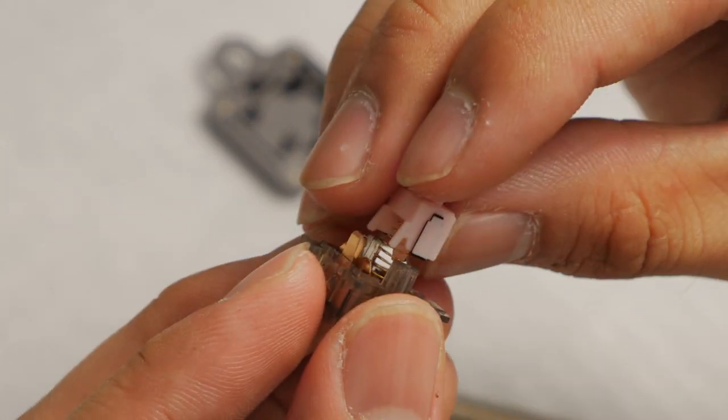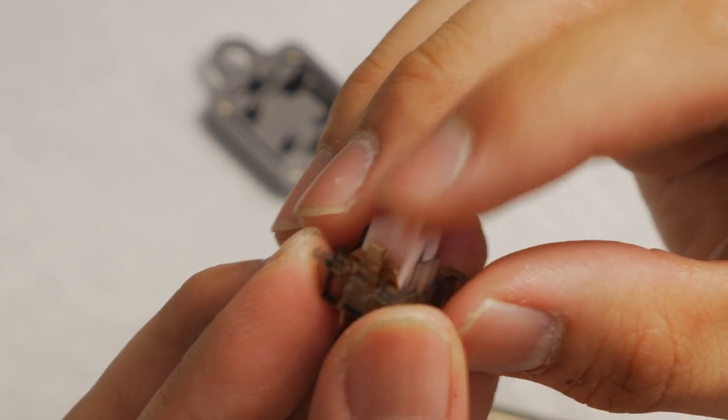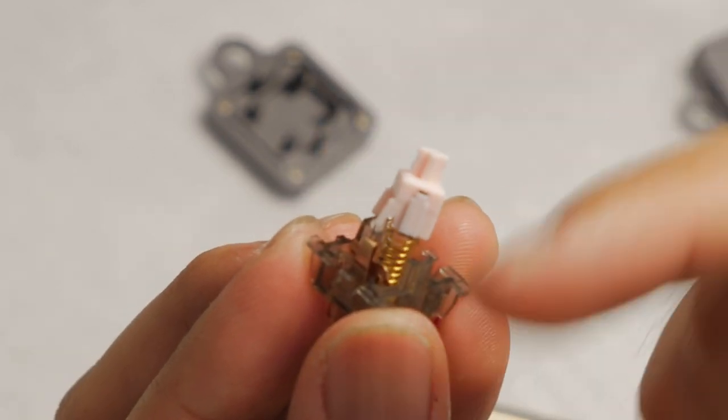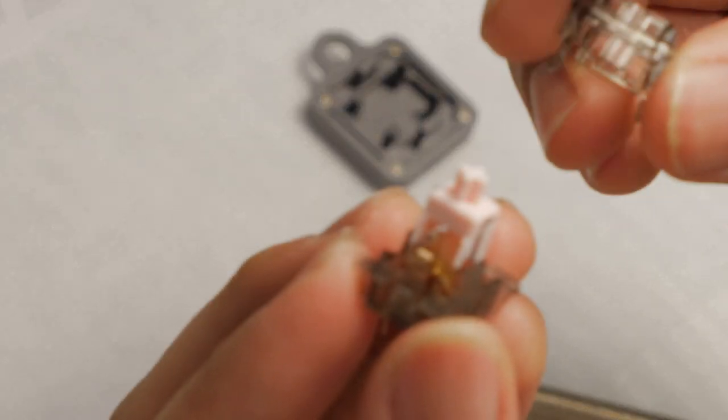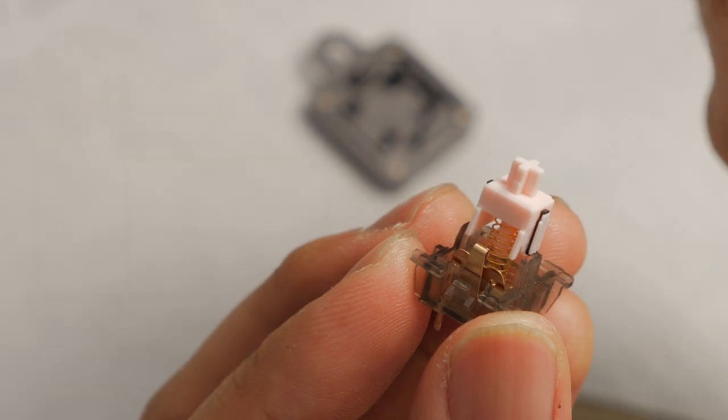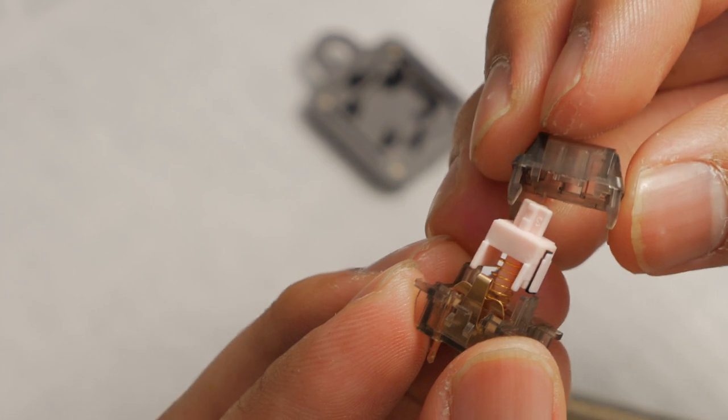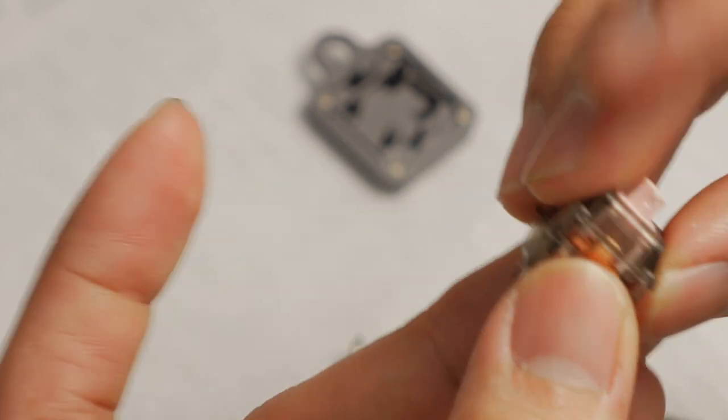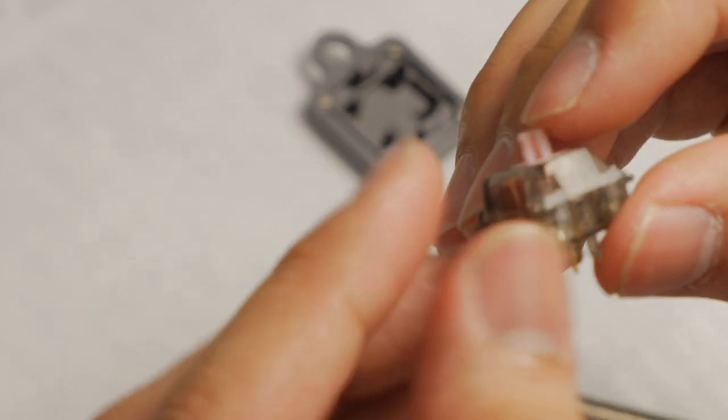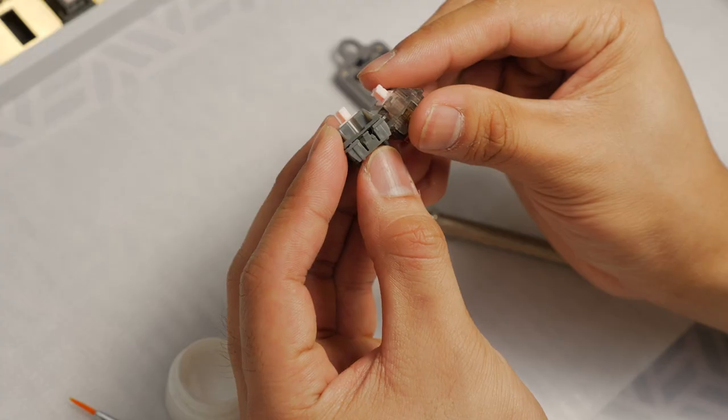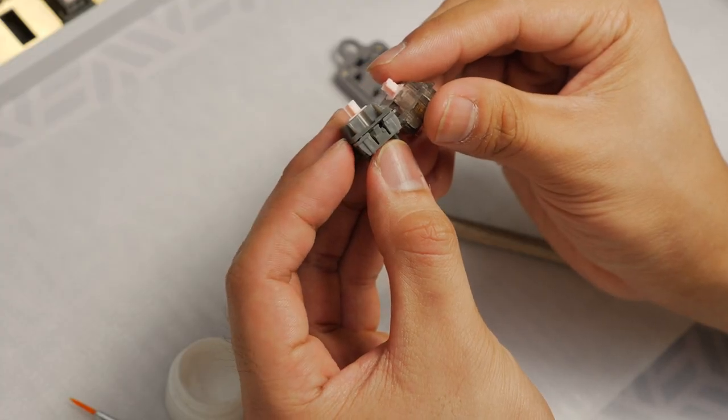Now just drop that back onto the spring. Remember, legs face the leaf. Top housing. Look for the nubs for this one. Nubs are right there. This one I did not film. And there you have it. Two lubed linear switches.